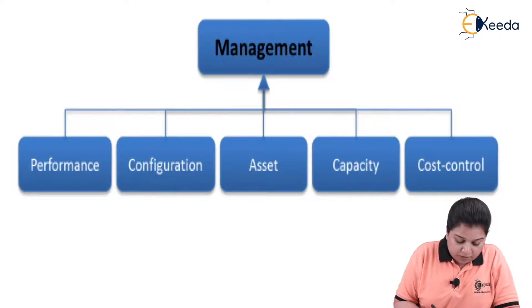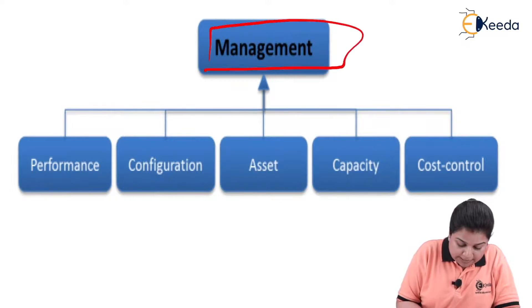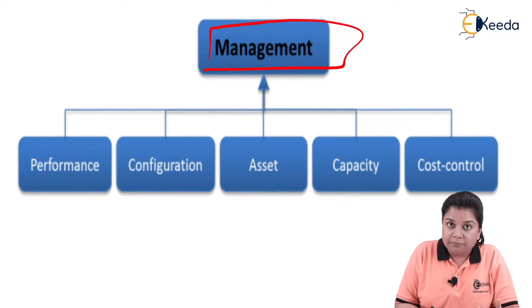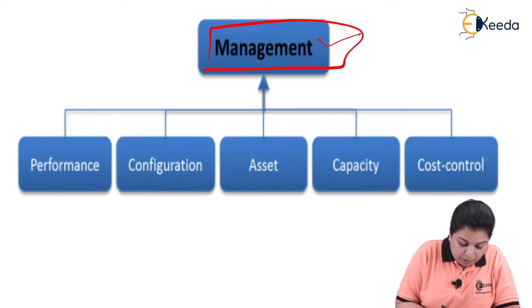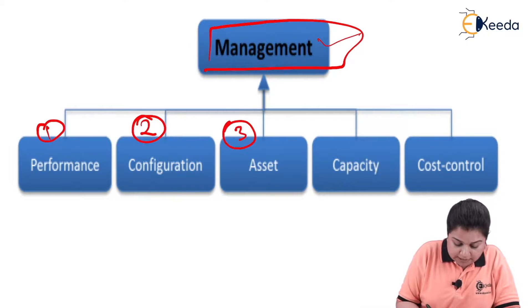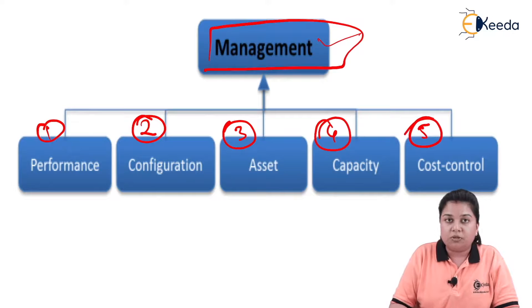This domain and its subtypes can be seen in the diagram. The subtypes are: performance, configuration, asset, capacity, and cost control.